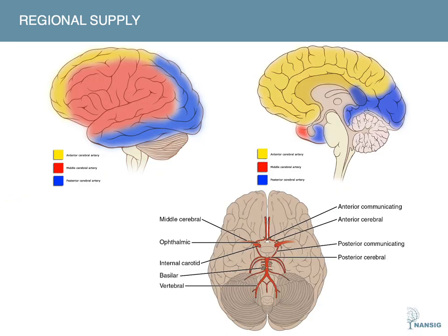Now we'll look at the regional supply of each vessel. We have a lateral view and a medial view of the brain for reference. Starting with the anterior cerebral artery: it supplies the yellow region, covering much of the frontal lobe but also a very significant medial aspect of the brain.